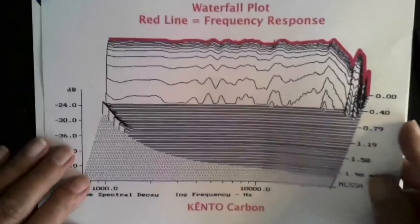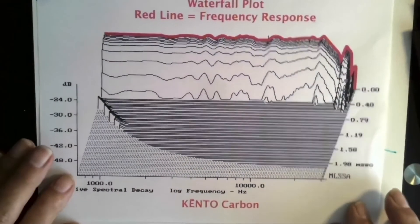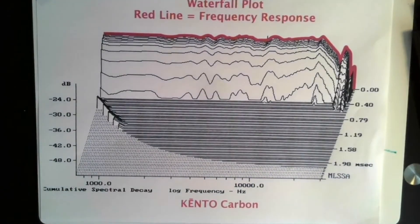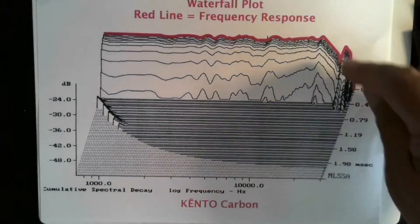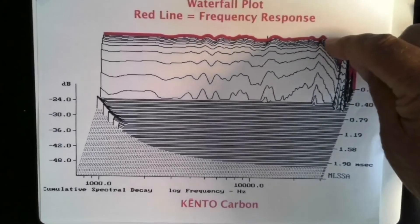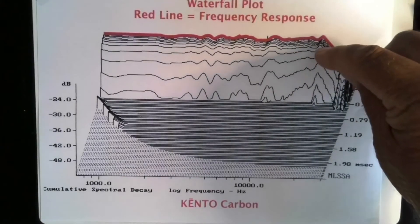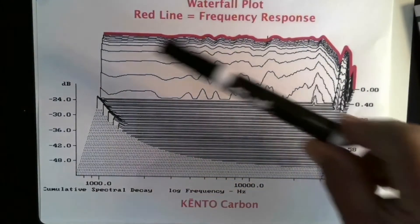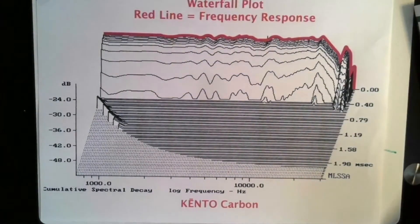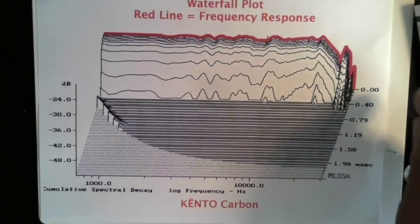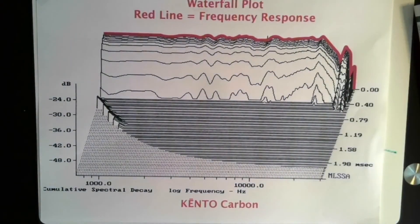The next thing that we plot, that we show in the specifications, is called a waterfall plot. Basically what a waterfall plot is, you see on the very back here, there's about five or six lines that are actually the frequency response of the speaker. That's what that speaker measured.